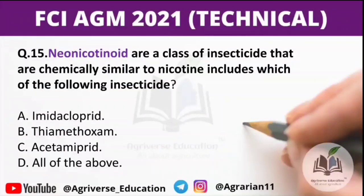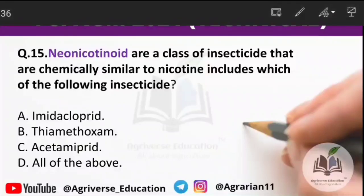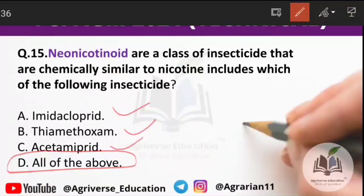Question 15: neonicotinoids are a class of insecticides chemically similar to nicotine. From the given options — imidacloprid, thiamethoxam, and acetamiprid — all three are neonicotinoids. So option D, all of the above, is the right answer.